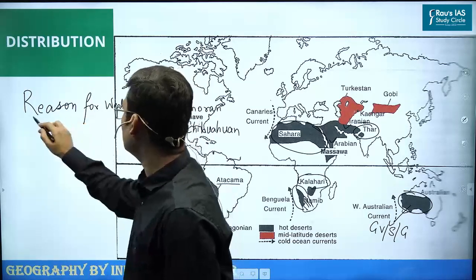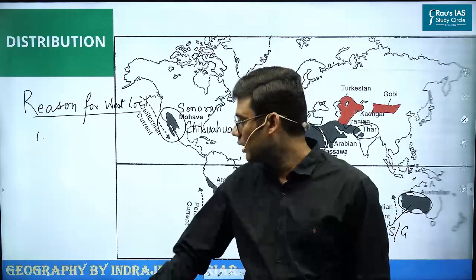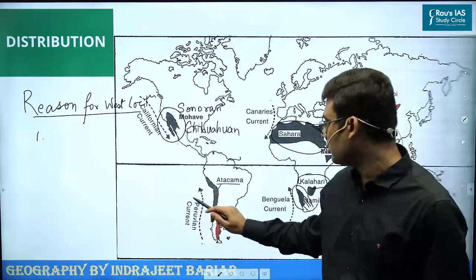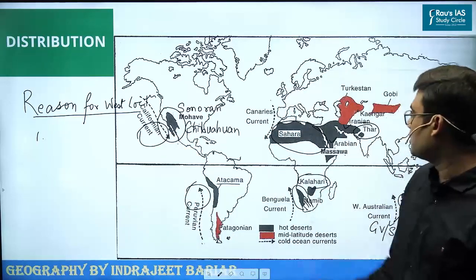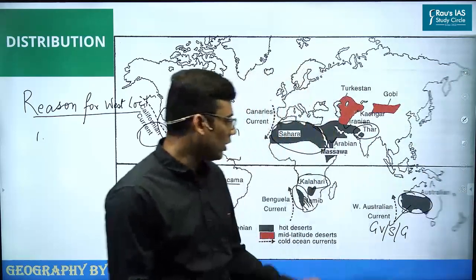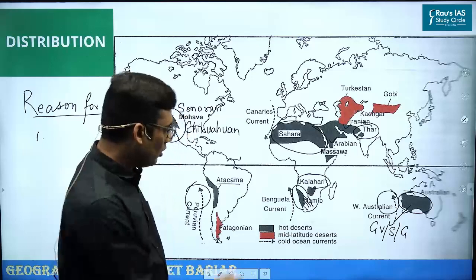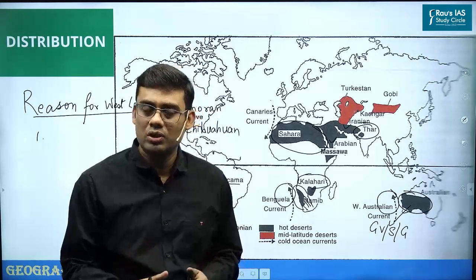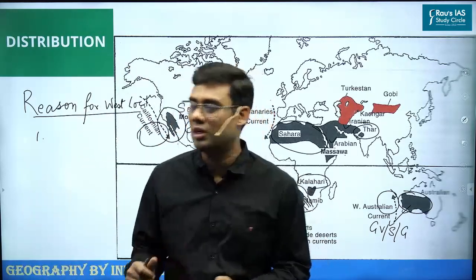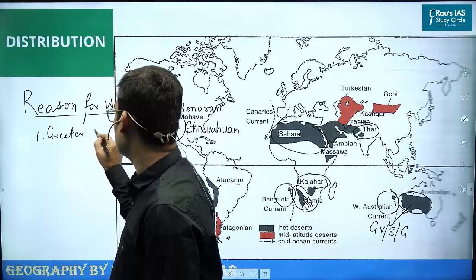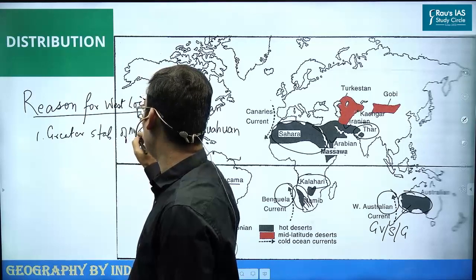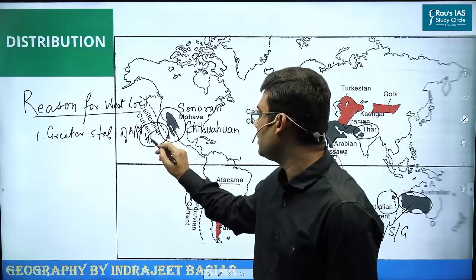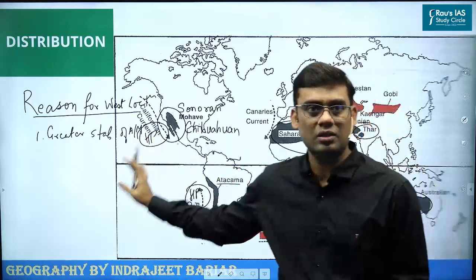The first reason for this western location is that on the eastern side of the oceans — whether the Pacific Ocean, Indian Ocean, or Atlantic Ocean — there is greater stability of air masses. This greater stability of air masses is primarily due to the high pressure cells which exist in the eastern margin of the oceans.